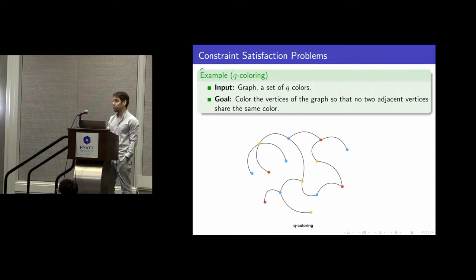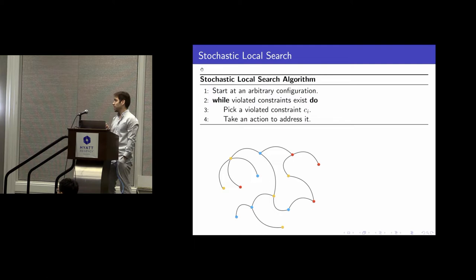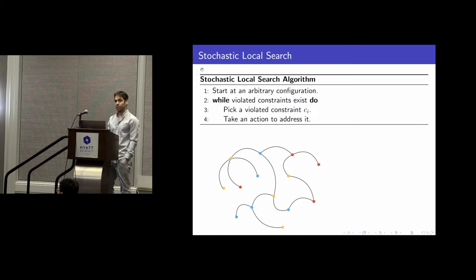In this talk I'm not going to talk about approximation algorithms. Instead, I'll focus on identifying interesting families of constraint satisfaction problems that admit a solution and we can find such a solution efficiently. We are going to approach this task by using a stochastic local search algorithm.